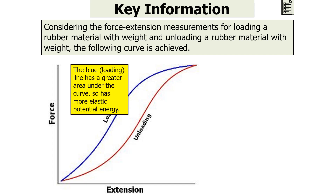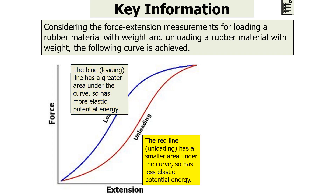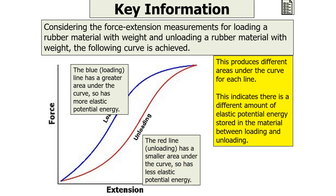Looking at the graph in more detail: the blue loading line has a greater area under the curve than the red one, and therefore has more elastic potential energy stored. Conversely, the red unloading line has a smaller area under the curve, so it's storing less elastic potential energy. This produces different areas under the curve for each line, indicating a different amount of elastic potential energy stored in the material between loading and unloading.